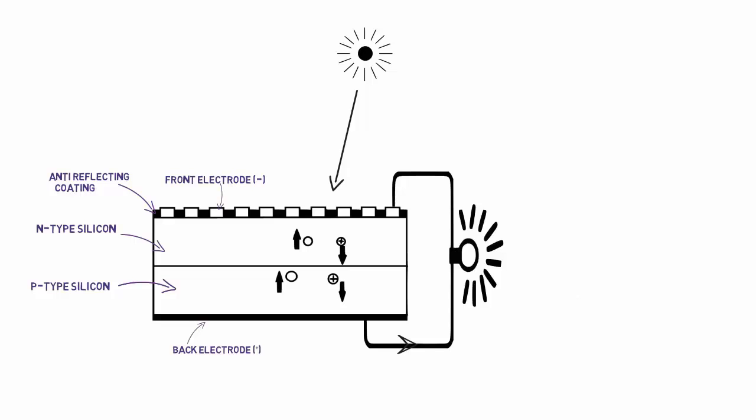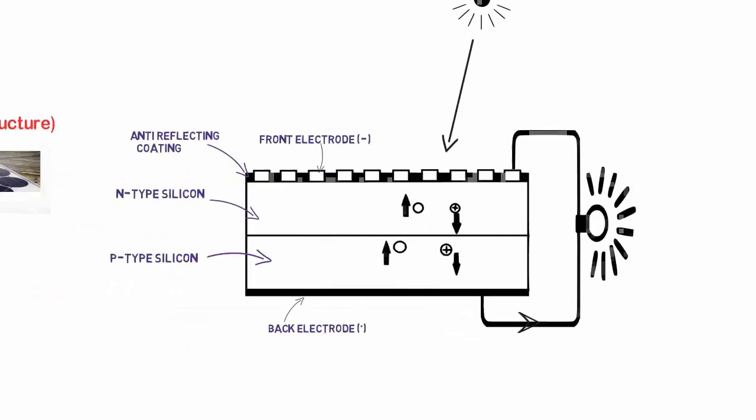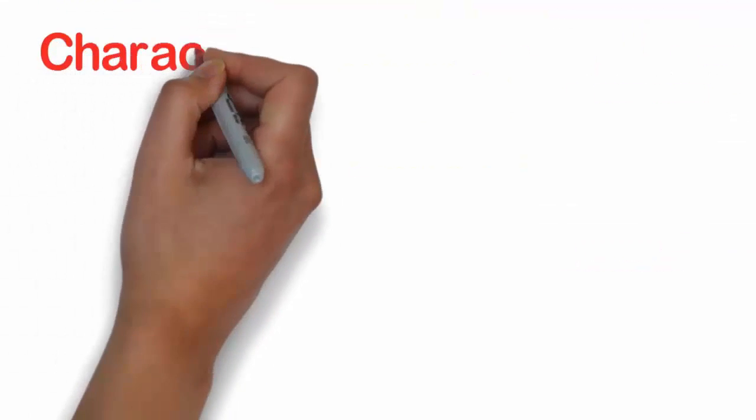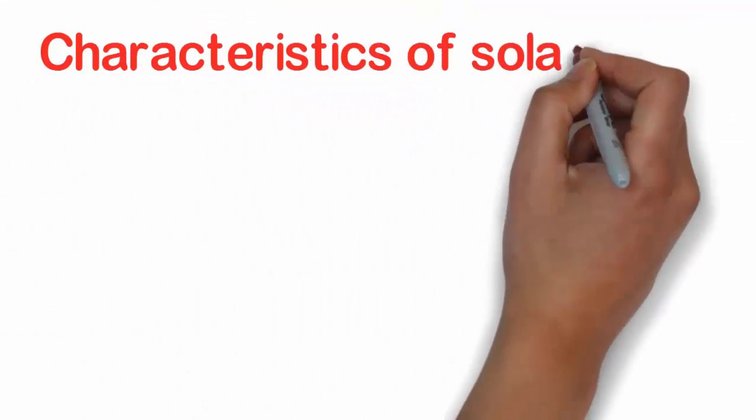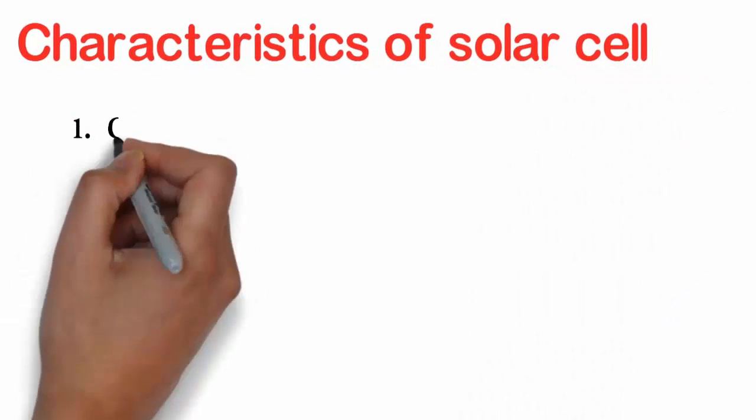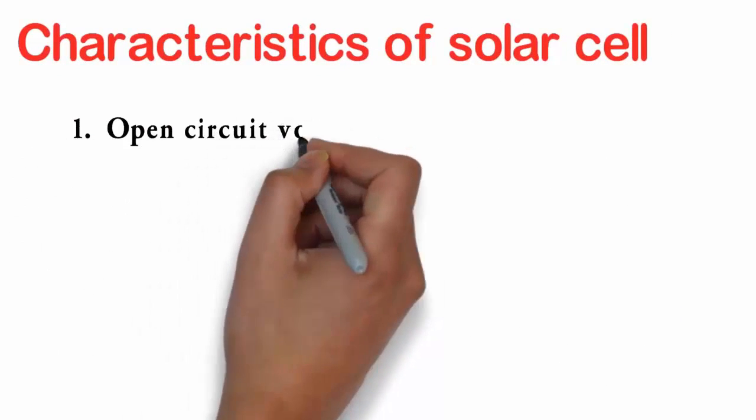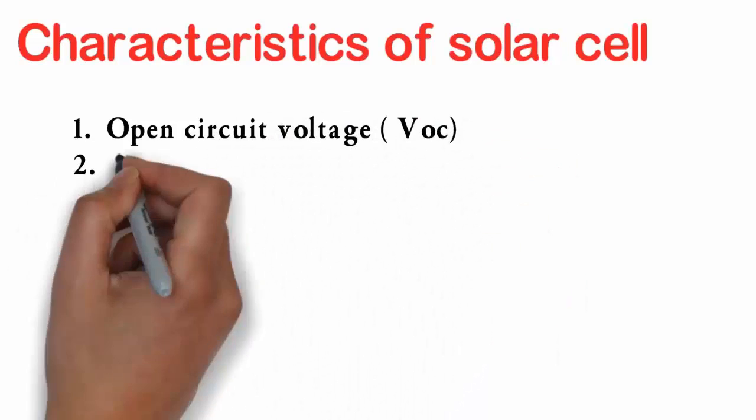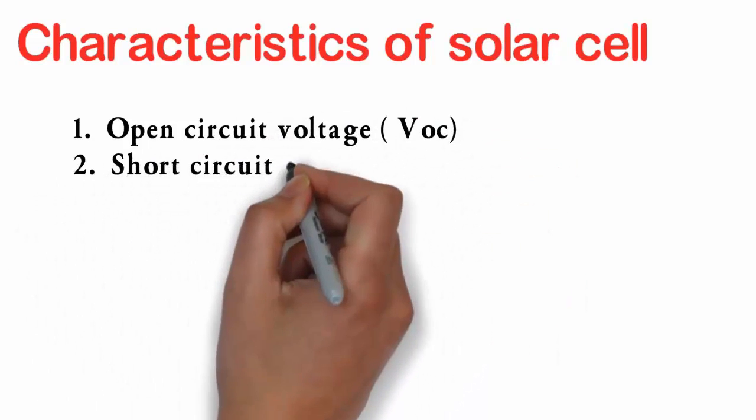There are mainly four characteristics of solar cell we should know about. Number one, open circuit voltage VOC. Number two, short circuit current ISC. Number three, fill factor. And number four is power conversion efficiency.